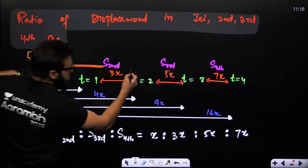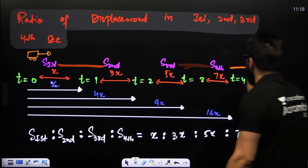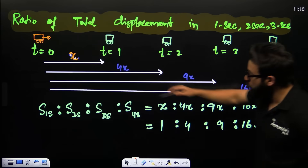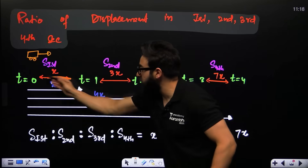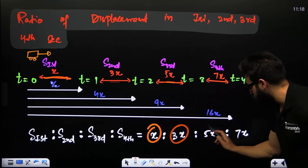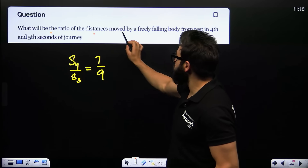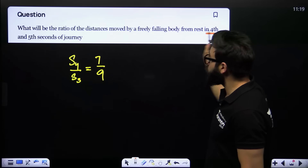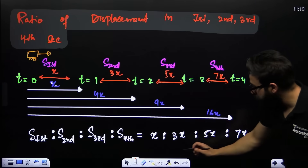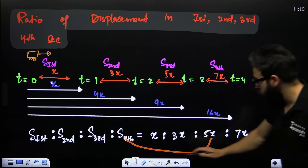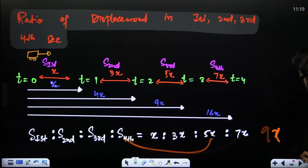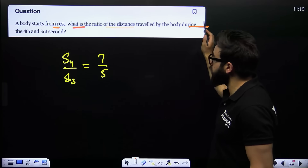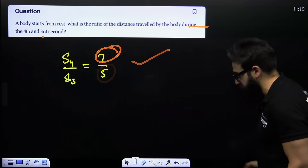Next is the ratio of displacement in each individual second: the 1st second, 2nd second, 3rd second, 4th second. This ratio is x : 3x : 5x : 7x. For example — what is the ratio of distance moved by a freely falling body in the 4th and 5th second? Answer: 7 : 9. Another question — a body starts from rest; ratio of distance traveled in the 4th to 3rd second is 7x : 5x, which is 7 : 5.